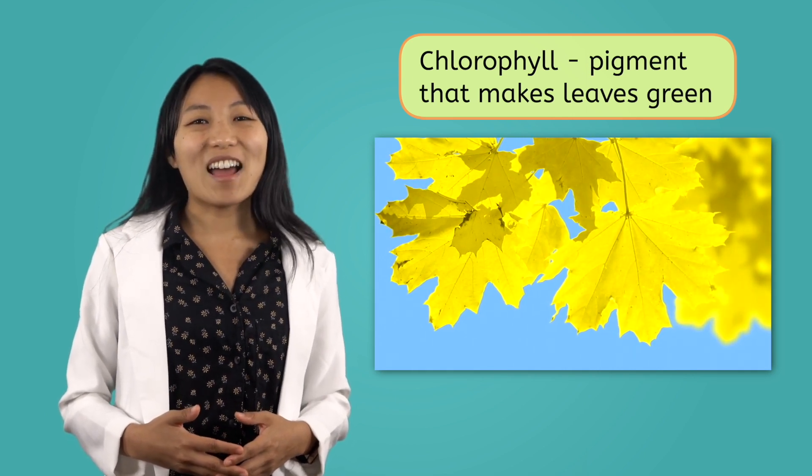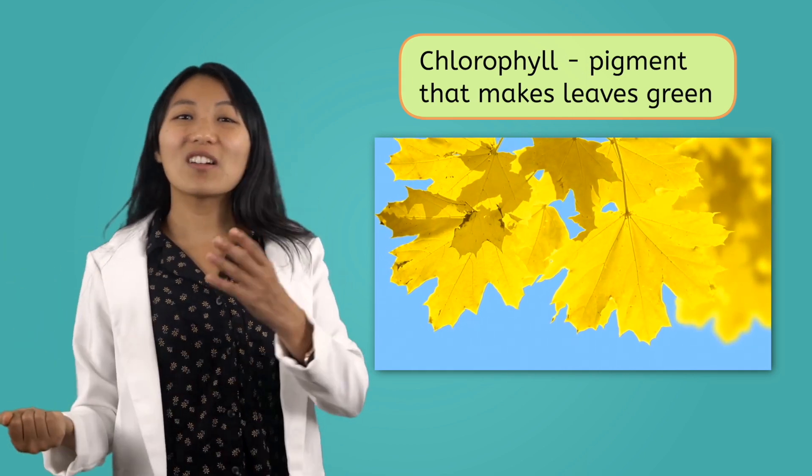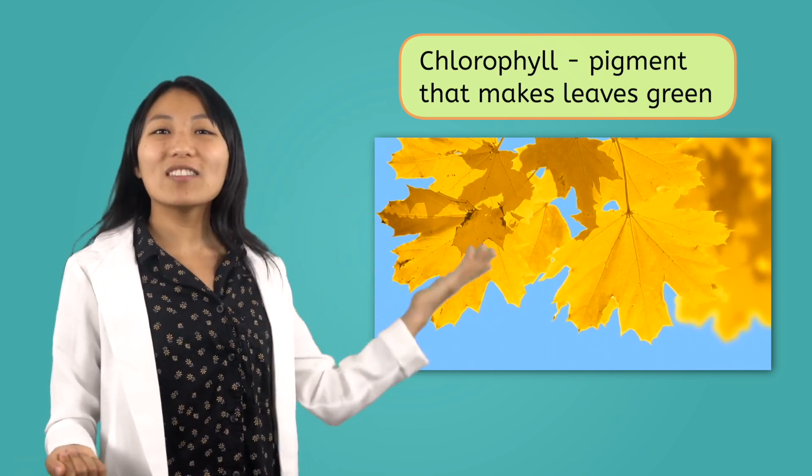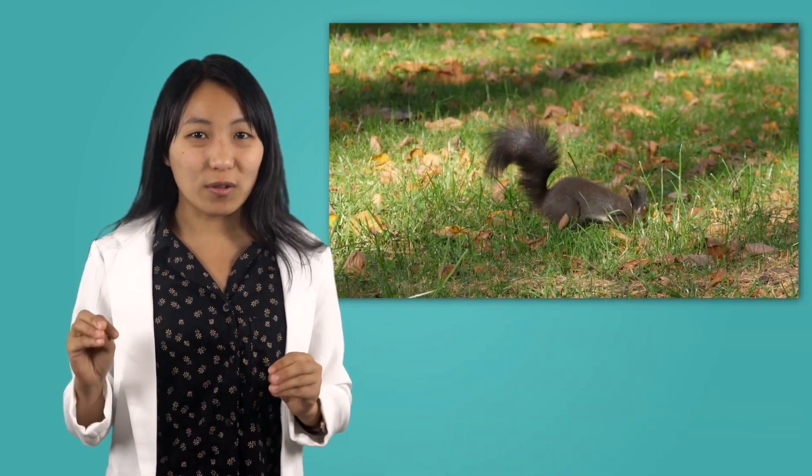That's why you see yellow, orange, red, and brown leaves during this time. Dropping their leaves allows plants to save their energy for the upcoming winter. You will also see some animals like squirrels gathering and burying nuts. They do this so they have food to eat during the winter. Pretty cool!